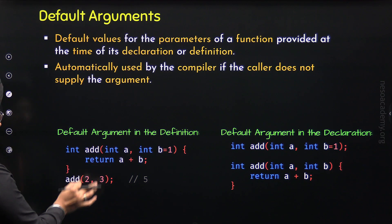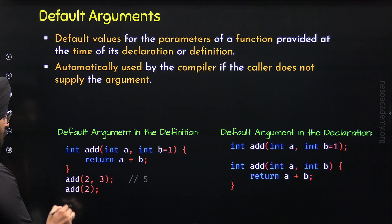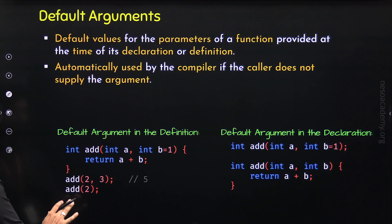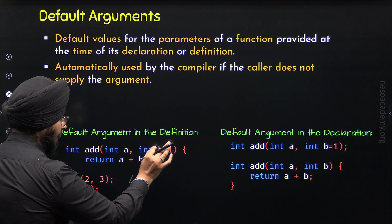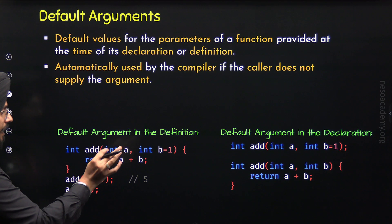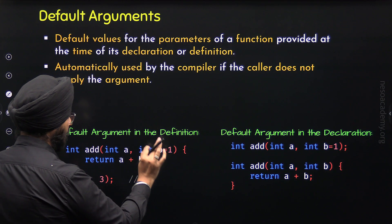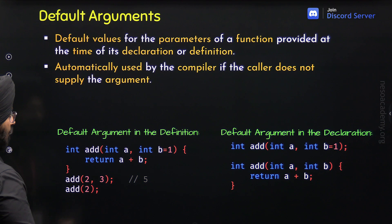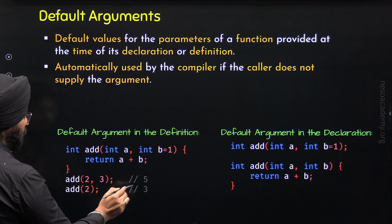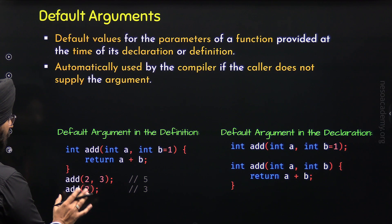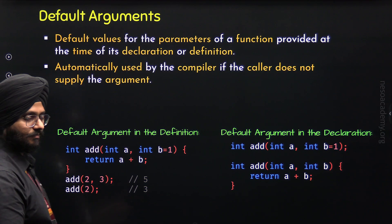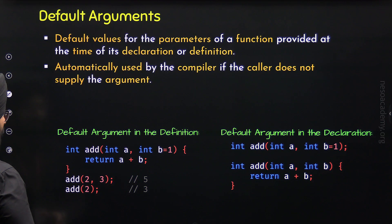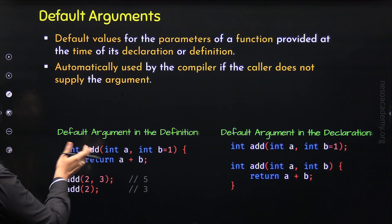Now, if we want, we can call this function like this — with just one argument. This argument will be received by parameter a. This means we have not passed any argument to parameter b, so the compiler will automatically assign the default argument to parameter b. So we can say a is 2 and b is 1 in this specific case. We will get the value 3 from this function. With this we have understood how to use default arguments in a function and how to call these types of functions.